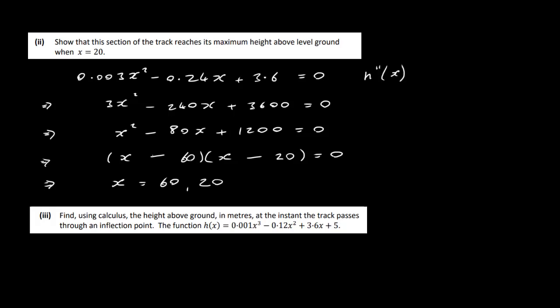So the way you would do that then is to differentiate again. So in other words, you would do h''(x), and that's equal to 0.006x - 0.24. So this is our second differential, and what we do now is just put in our x is equal to 20. If we put in x is equal to 20 here, we'll get 0.006 times 20 minus 0.24, and that will give us minus 31 over 25. Now the fact that it's less than 0 means that at x is equal to 20, we have a maximum.